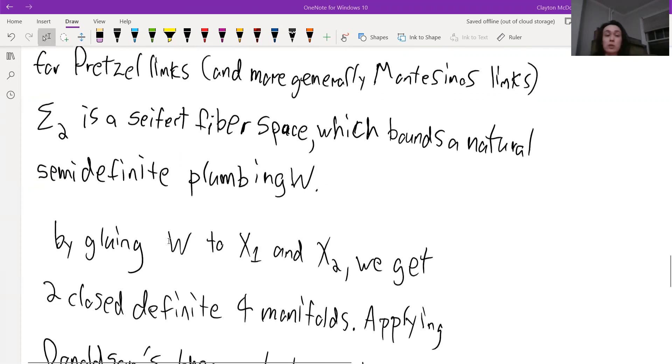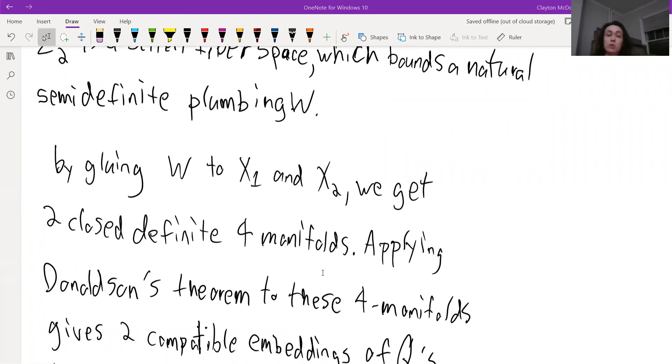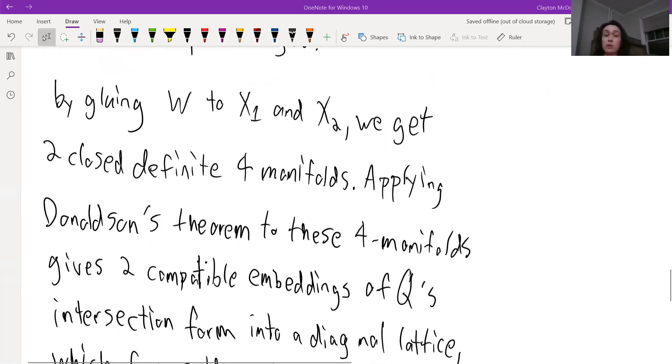Okay. So by gluing this W to X1 and X2, we get these two closed definite four manifolds, which we can then apply Donaldson's theorem to, to say that we get these embeddings of W's intersection form into a diagonal lattice.